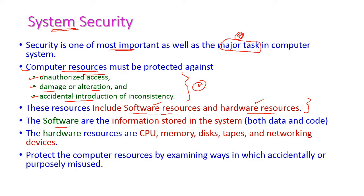Software resources are the information stored in our system — it may be data or code, system software, or application software. When it comes to hardware resources, we have CPU, main memory, secondary storage disk, tapes, networking devices, and so on. All physical devices are hardware devices.